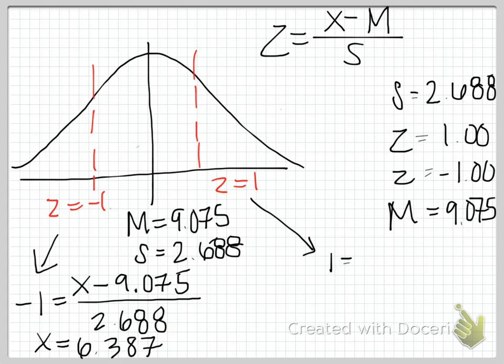So 1 equals x, that's what we're trying to figure out, minus our mean, 9.075, all over our standard deviation, which is 2.688. And we'll go ahead and solve for x again. So go ahead and manipulate all the numbers until you have x by itself. What you should get is that the number is 11.763. And that makes sense because that's above the mean of 9.075.